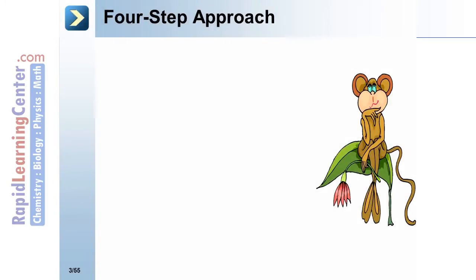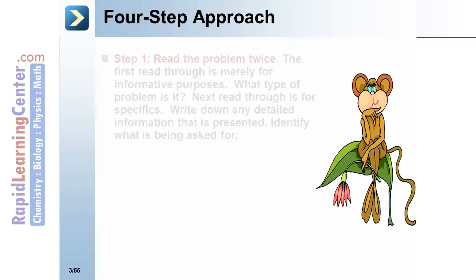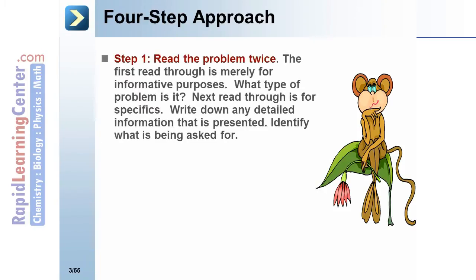Here we see a four-step approach. Step 1: Read the problem twice. The first read-through is merely for informative purposes. What type of problem is it? Next read-through is for specifics. Write down any detailed information that is presented. Identify what is being asked for.